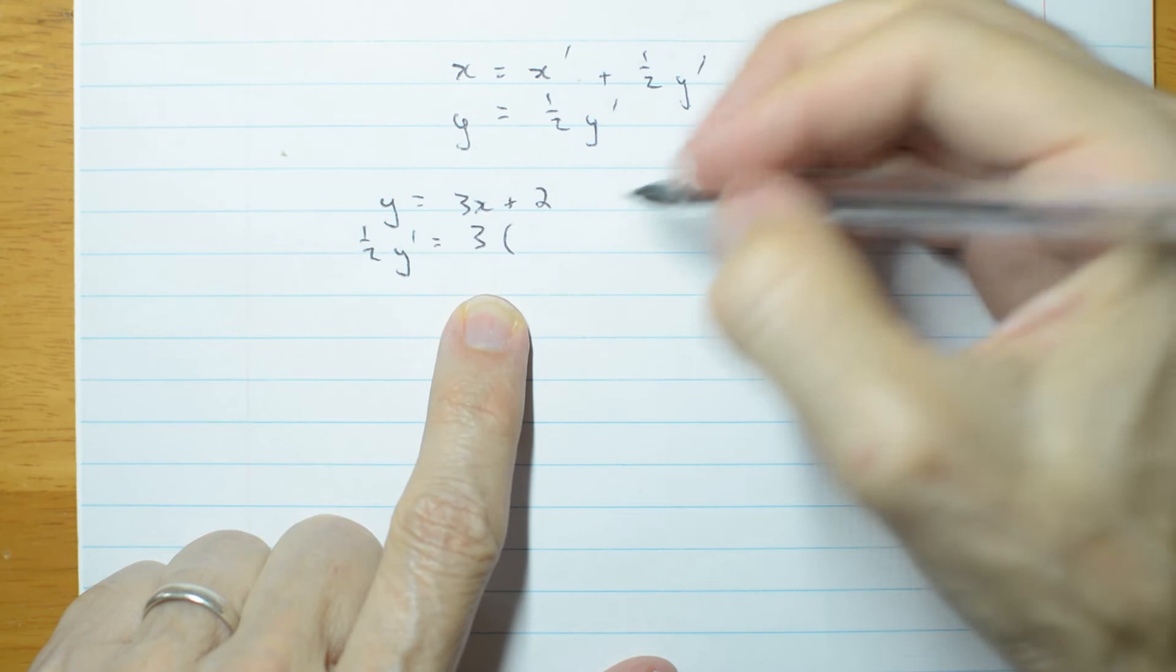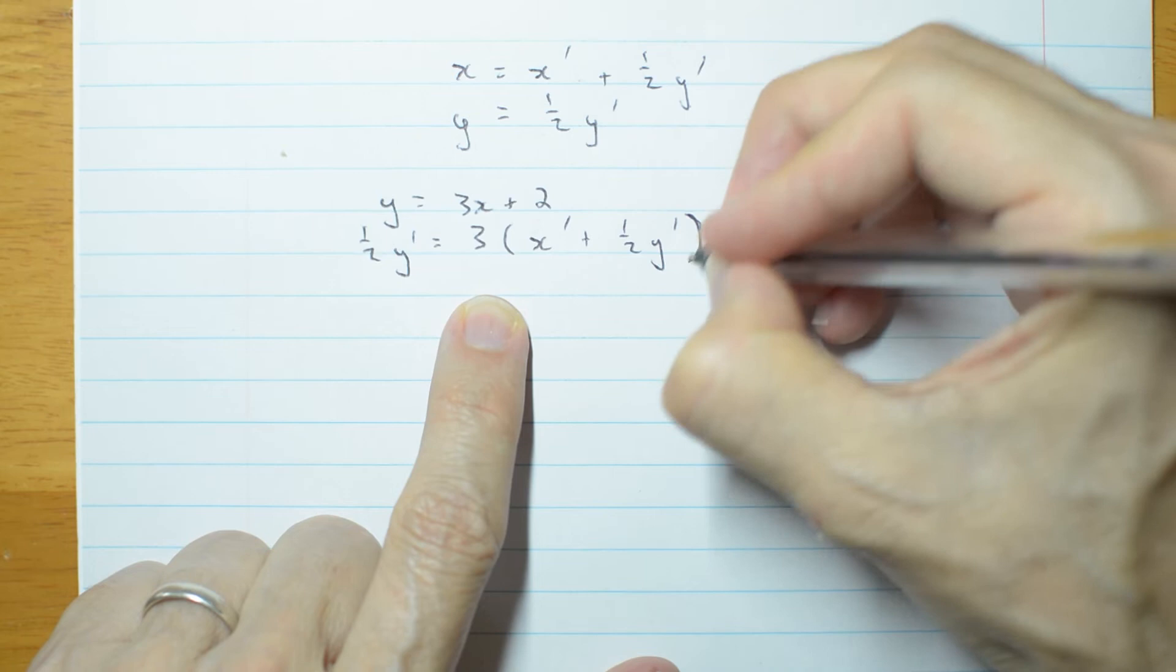Half y dashed is 3, what's x? x is this thing, x dashed plus a half y dashed, whoops, that was meant to be a round bracket, plus 2.